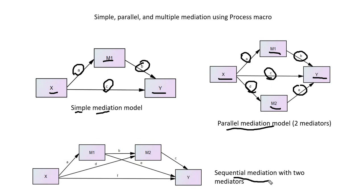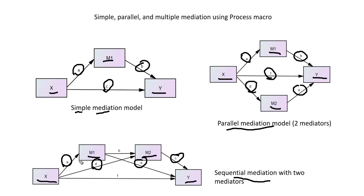The last model tests for sequential mediation, where the effect of X on Y is mediated three ways. The first route involves the product of paths A and E, capturing mediation partially through M1. The second involves paths D and C, giving a second indirect effect via M2. The last involves the product of paths A, B, and C, capturing sequential mediation where the effect of X goes through M1, then M2, and then to Y.